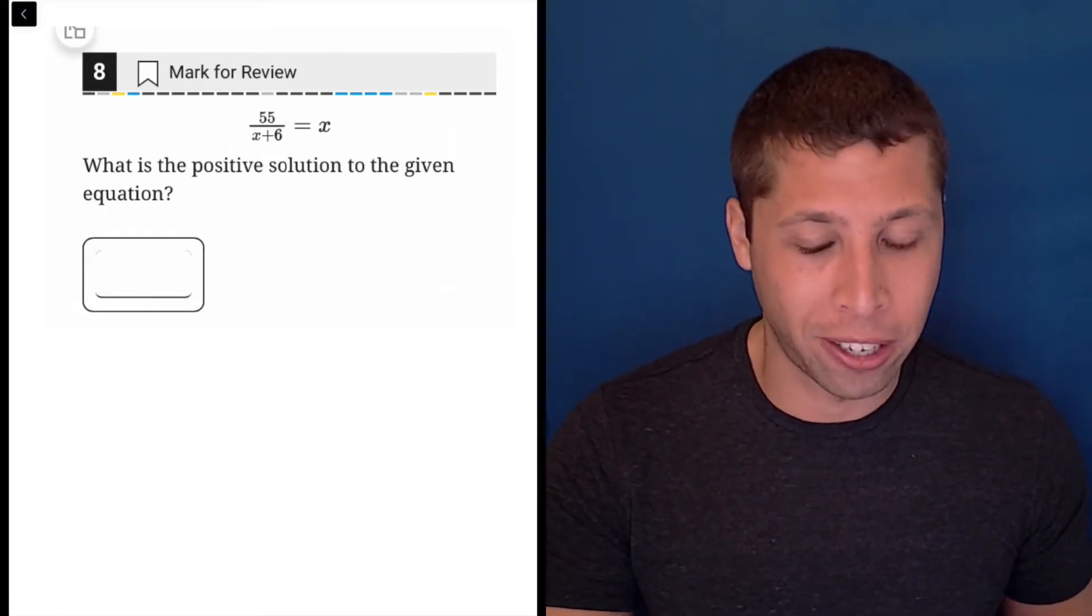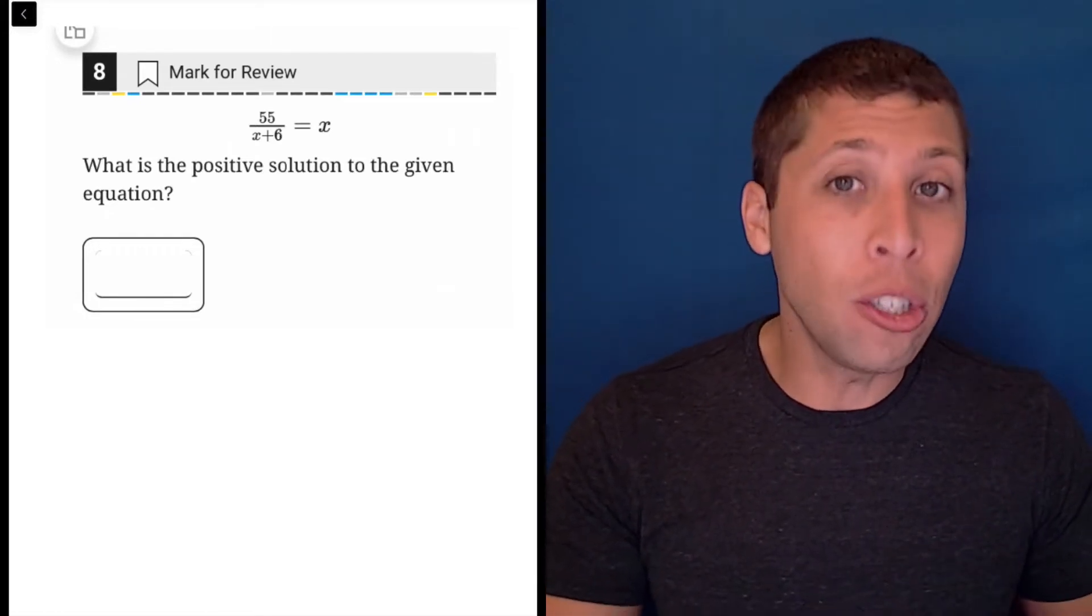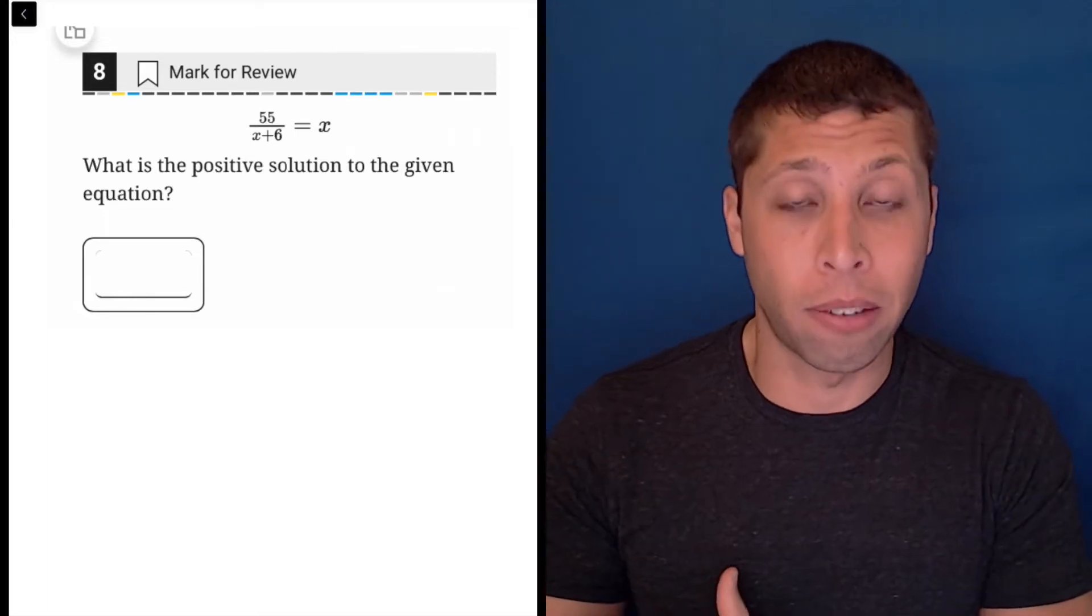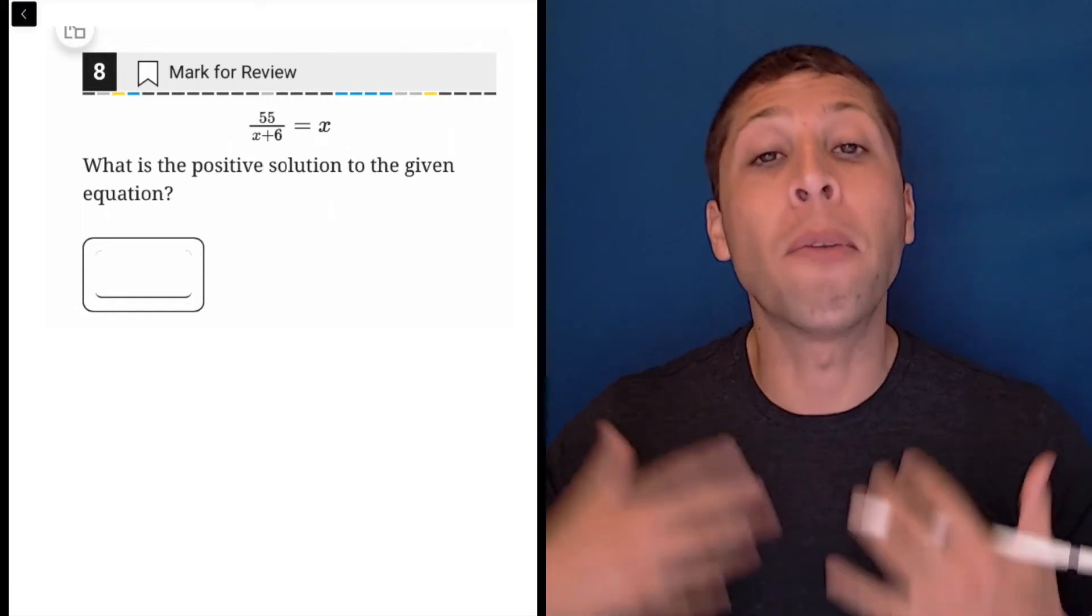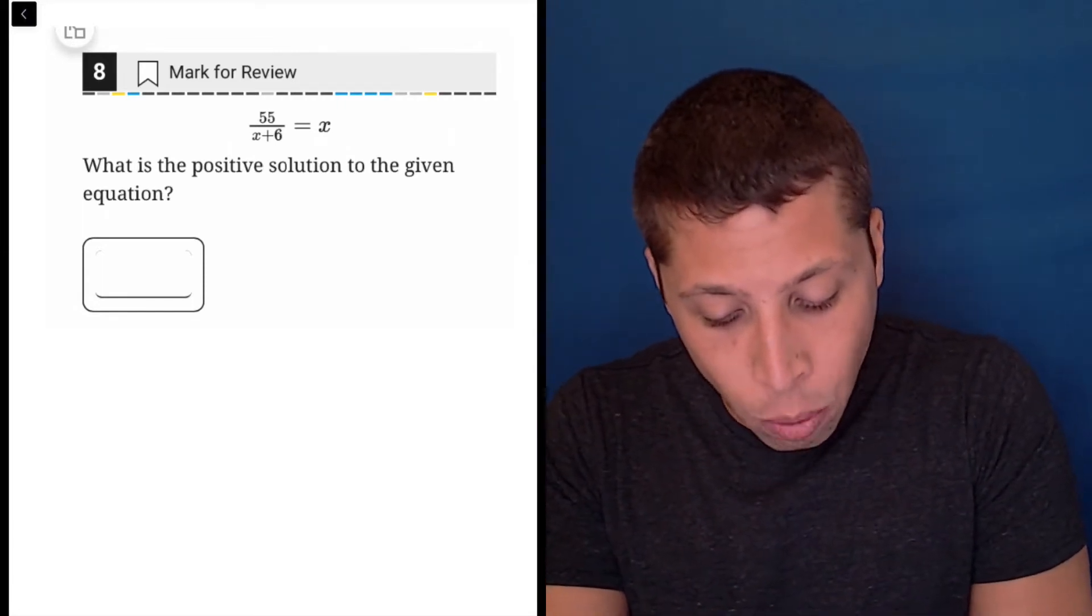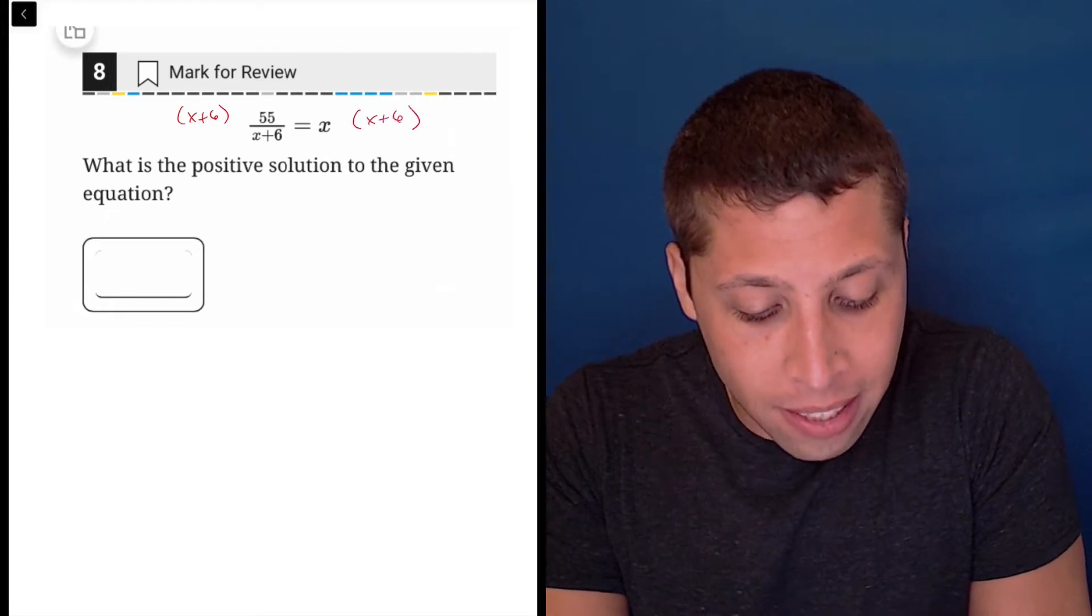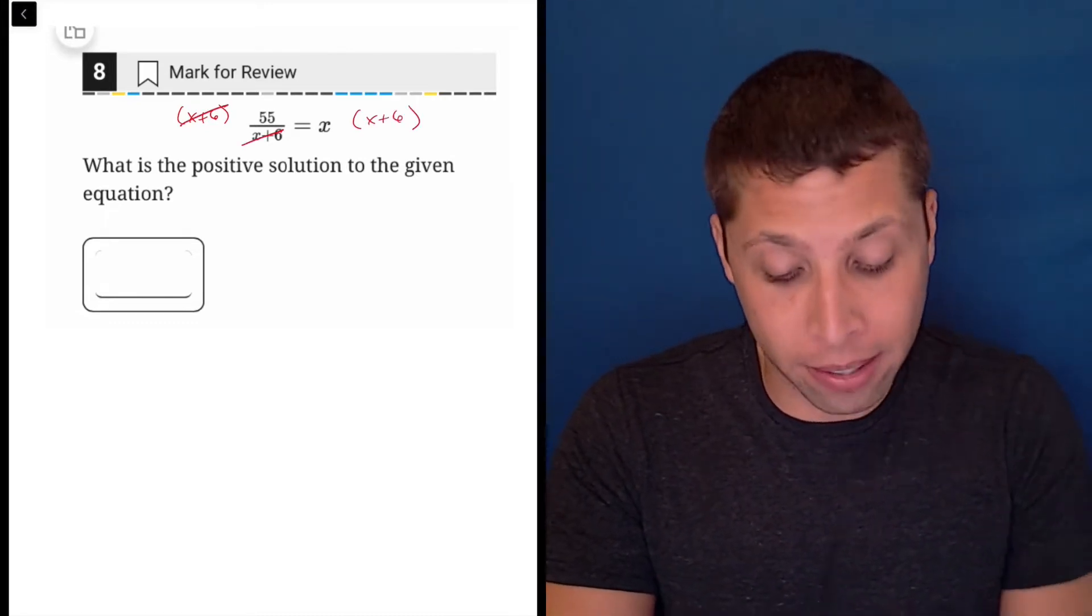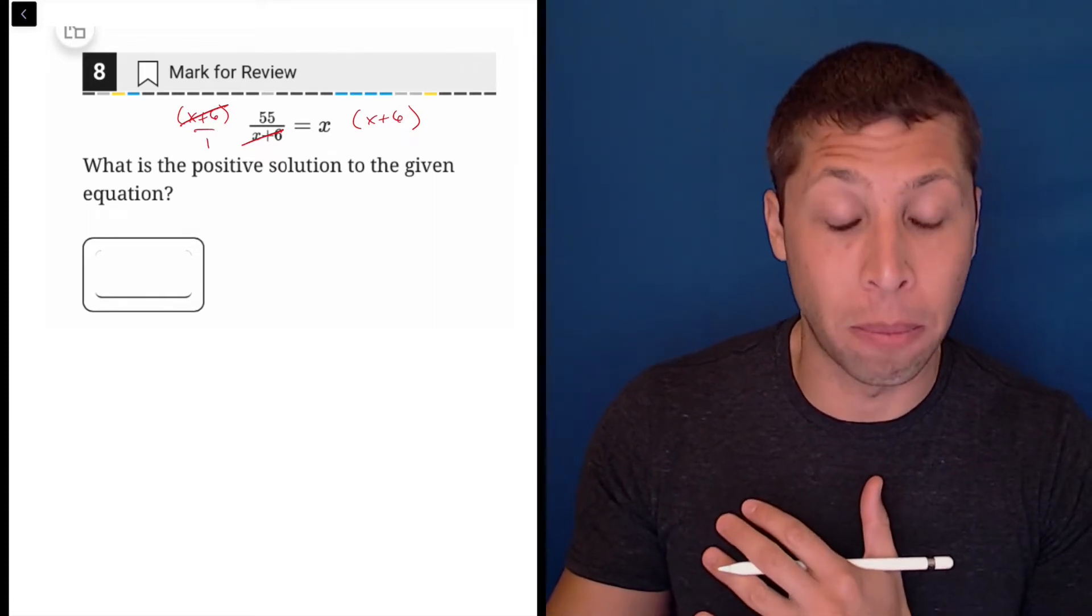Basically whenever we have a fraction, a good goal is to get rid of the fraction, and we do that in math through multiplication because fractions are basically division. So you cancel something out using its opposite. If a fraction is division, then multiplication will cancel it out. So I would have to multiply both sides by x plus six to make the denominator go away on the left, right? Because it's x plus six over one, and it's kind of like we're reducing this fraction to make the denominator disappear.